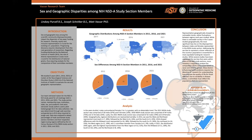In our study, we were specifically looking at a particular study section of the NIH, which is the NSDA section, which stands for Neurological Sciences and Disorder Study A, to look at the composition of the committee. We specifically looked at the sex and geographic representation among these committees to see what was being represented.